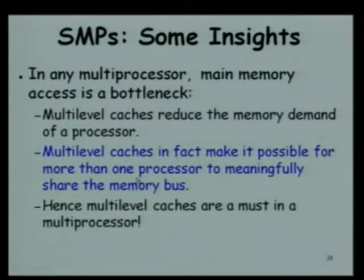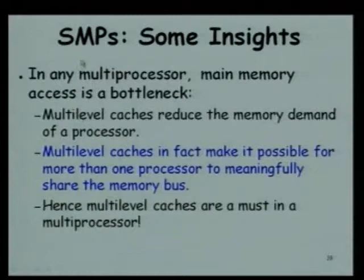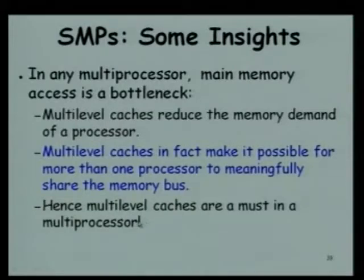We should be able to reduce the number of transactions to memory to the minimum. Higher and higher levels of caches become important as we go for larger and larger numbers of symmetric multiprocessors. L3 and so on would become more common. Definitely L2 would be there in any SMP for it to function meaningfully, and there might even be an L3 cache. A multilevel cache is a must in any SMP.